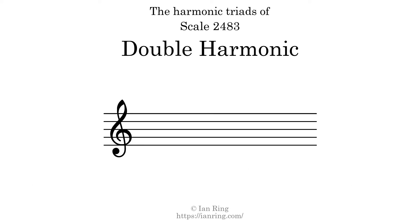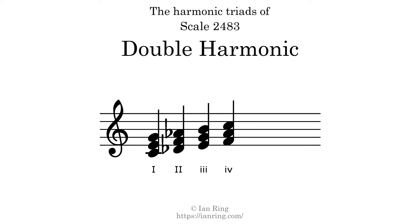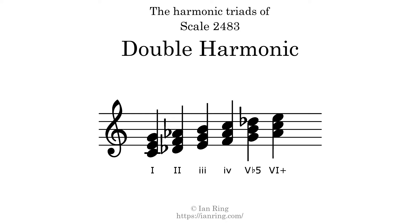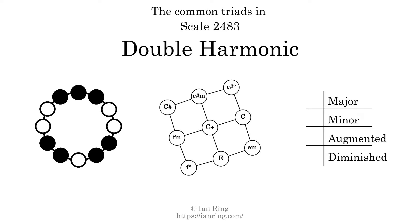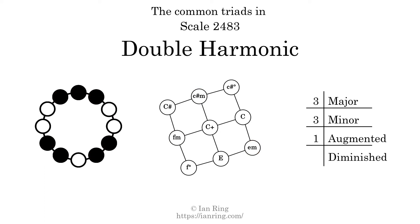Here are the harmonic triads present in this scale. The diagram in the center is a graph of parsimonious voice leading between triads. There are 3 major triads, 3 minor triads, 1 augmented triad, and 2 diminished triads. Here is a Hamiltonian path of parsimonious voice leading that uses all the triads.